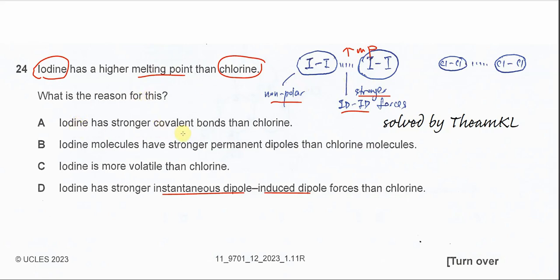A: iodine has stronger covalent bonds than the chlorine. It's not about covalent bonds. It's about the intermolecular forces or Van der Waals forces.